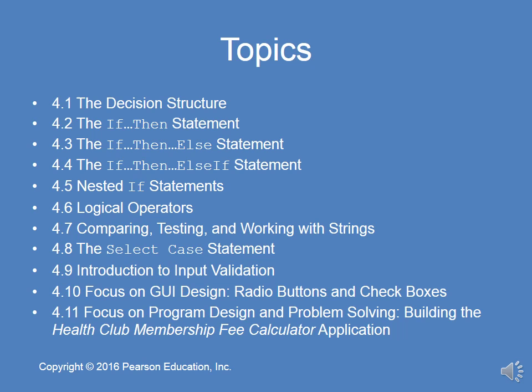As I've done in the past, Chapter 4 will be covered over a two-week period, and we will most likely get through 4.6 in this first lecture. I try to keep the length of the lectures comparable. We're going to cover the decision structure, and the primary branching structure we will discuss is the if-then statement, and then we will add a false component: if-then-else, and then if-then-else-if, which is a nested branch.